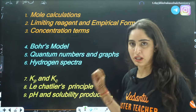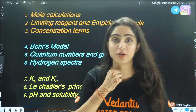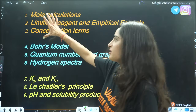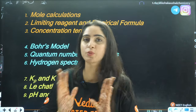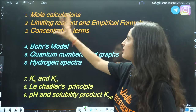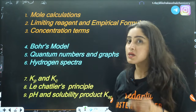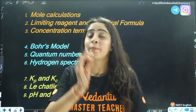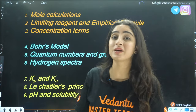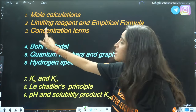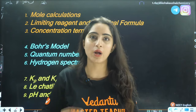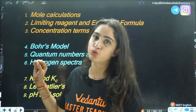First is mole calculations from some basic concepts of chemistry. Around 1 to 2 questions will be asked — most probably 1 question — based on limiting reagent, empirical formula, concentration terms, and stoichiometry. The reason this is under most important topics is because mole calculations and concentration terms are used in other chapters of physical chemistry as well.